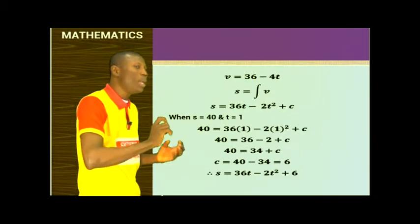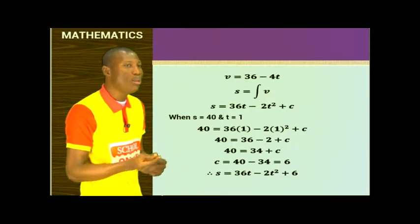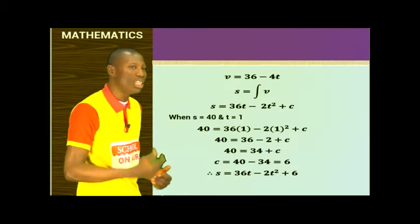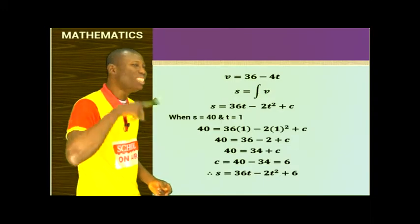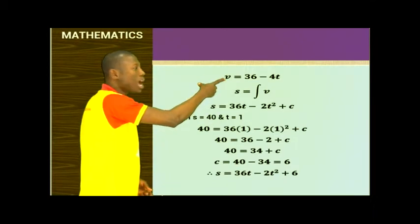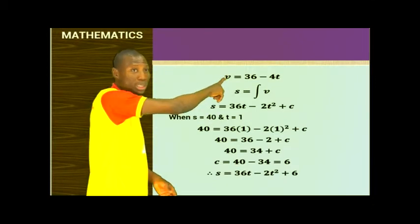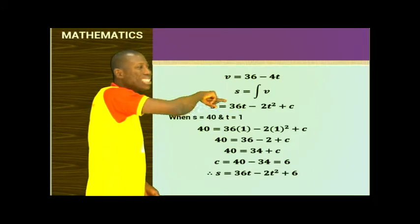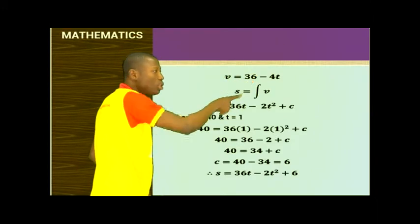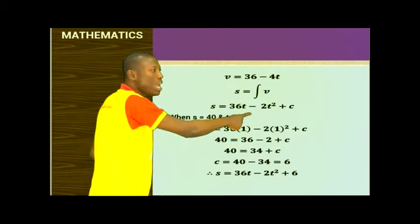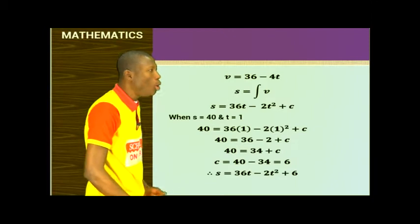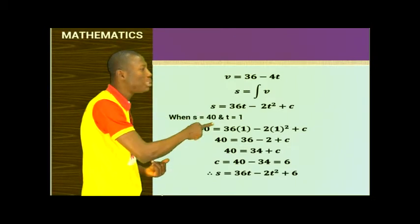We know that V equals dS/dt. When you differentiate displacement with respect to time you get velocity, so when you have V and want S, you integrate V to get S. Integrating V equals 36 minus 4t gives S equals 36t minus 2t squared plus C.